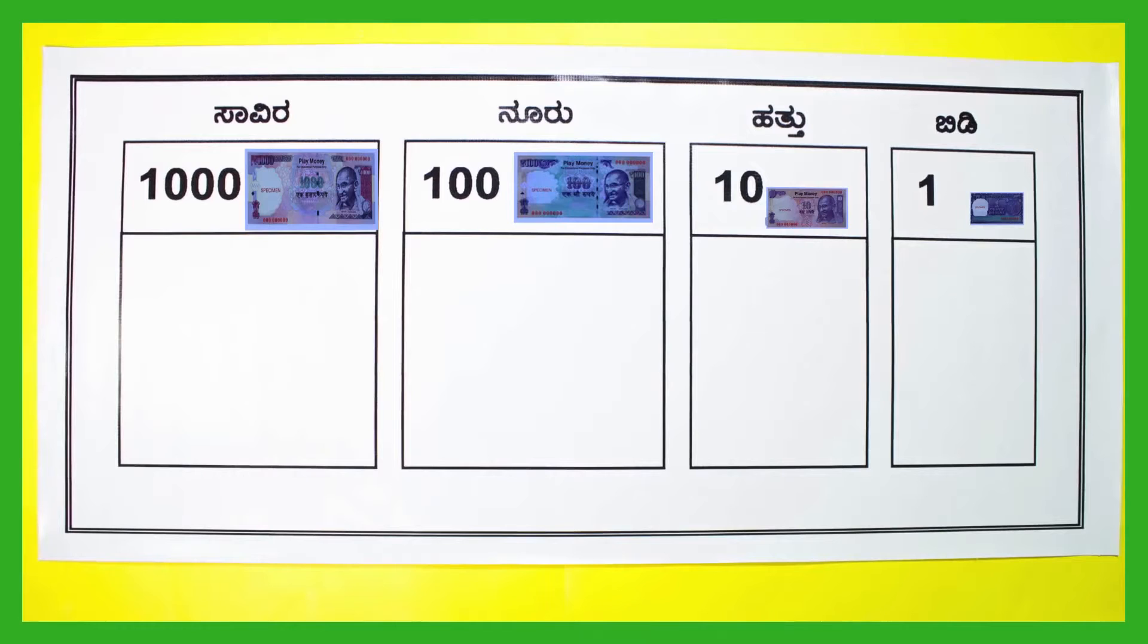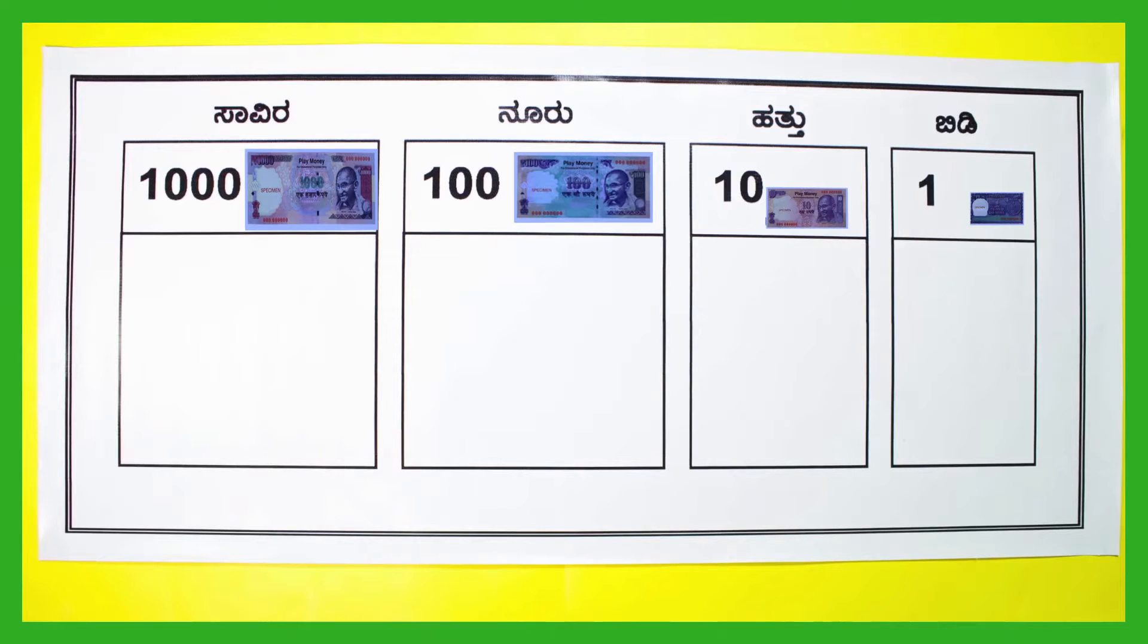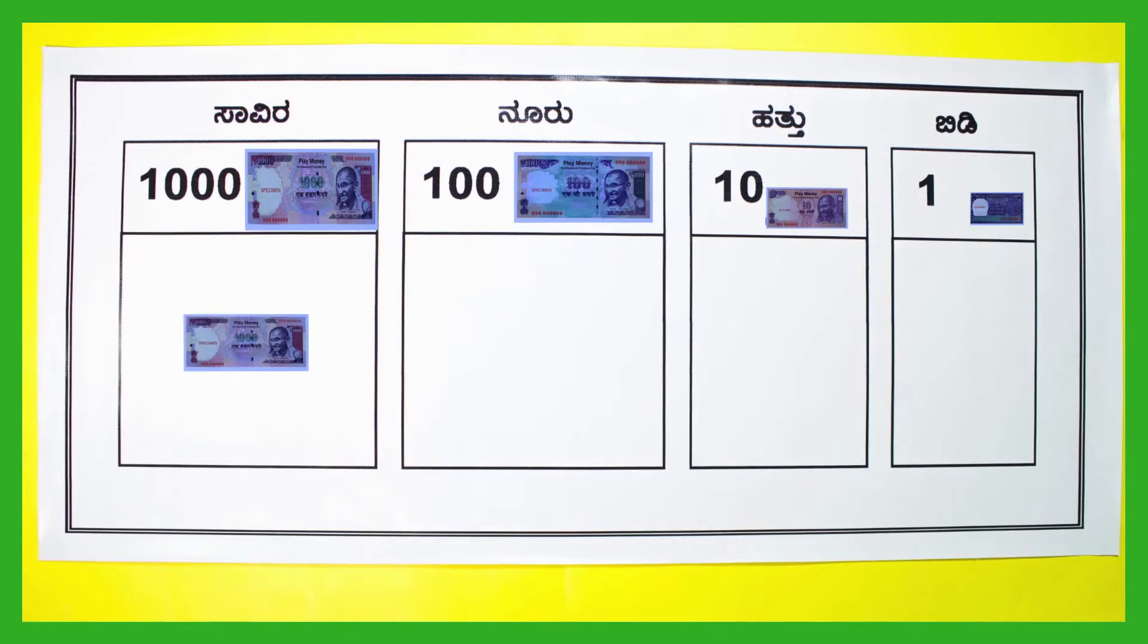Grouping by tens is very simple with money. Once we have 10 ones, we group them and replace them with one 10 rupee note which is placed in the tens place. Similarly, we group 10 tens and replace them with a 100 rupee note. 10 hundreds can be replaced by a 1000 rupee note.